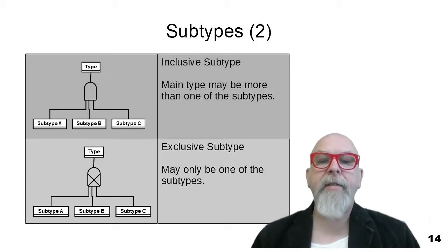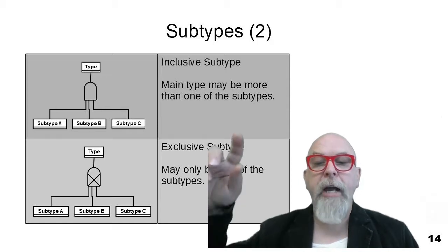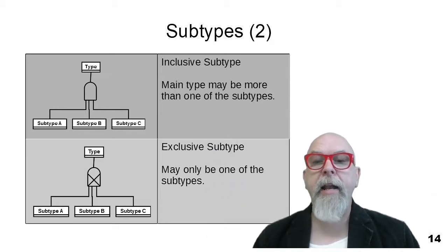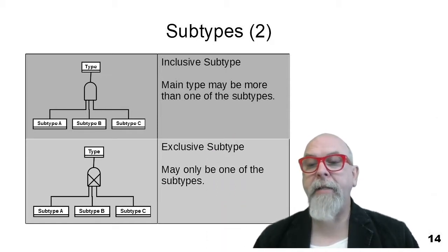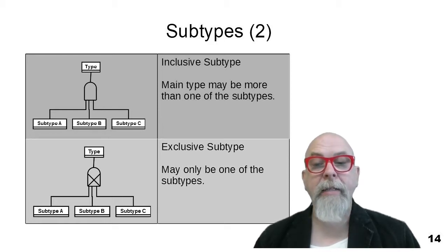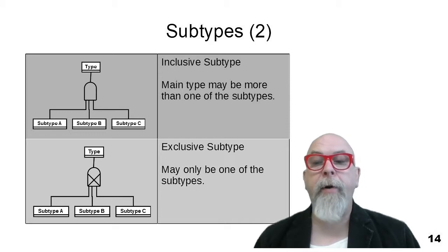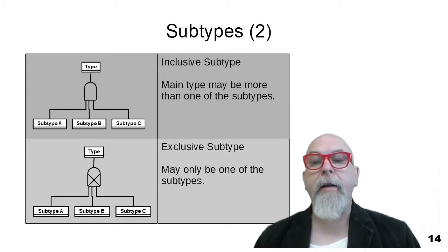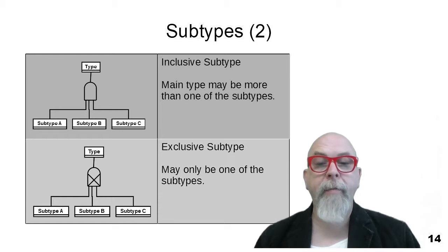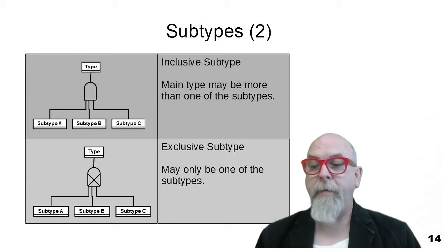The subtype symbol is a little bell shape. An inclusive subtype is a bell without any markings in it, and an exclusive subtype is shown as the bell shape with an X. The primary key of the master type and the primary key of the subtype are usually the same, so the primary key of the subtype would also be a foreign key pointing back to the master type.